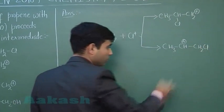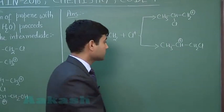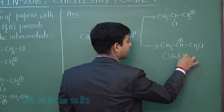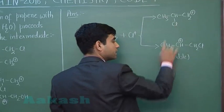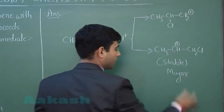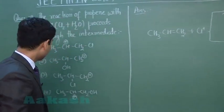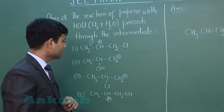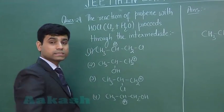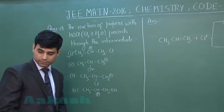The intermediate CH3-CH+-CH2Cl is more stable compared to CH3-CHCl-CH2+, as the secondary carbocation is more stable than the primary. Therefore this will be the major intermediate. Hence the correct answer for this question is option number 1, where the stable intermediate is formed.